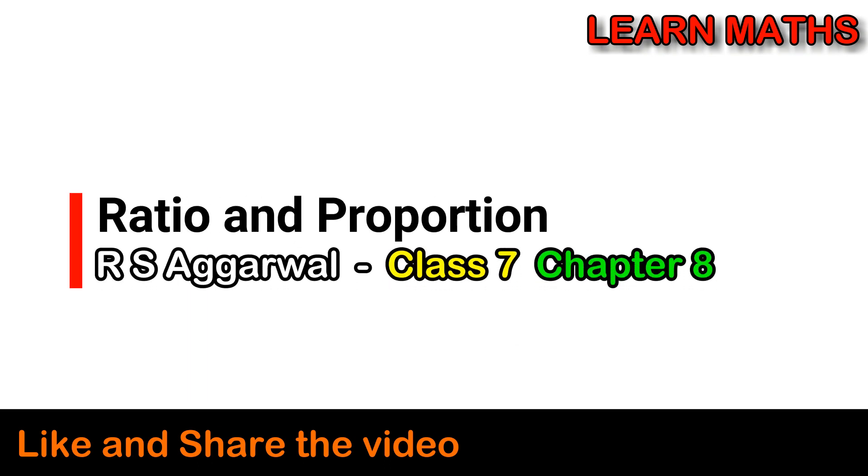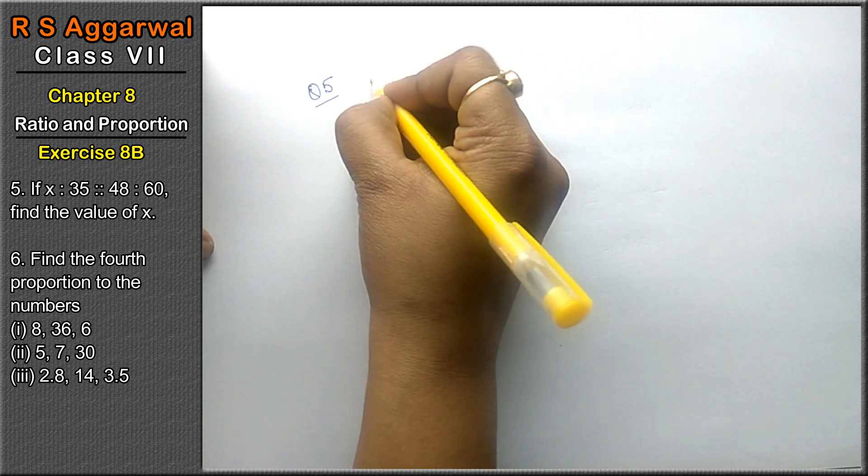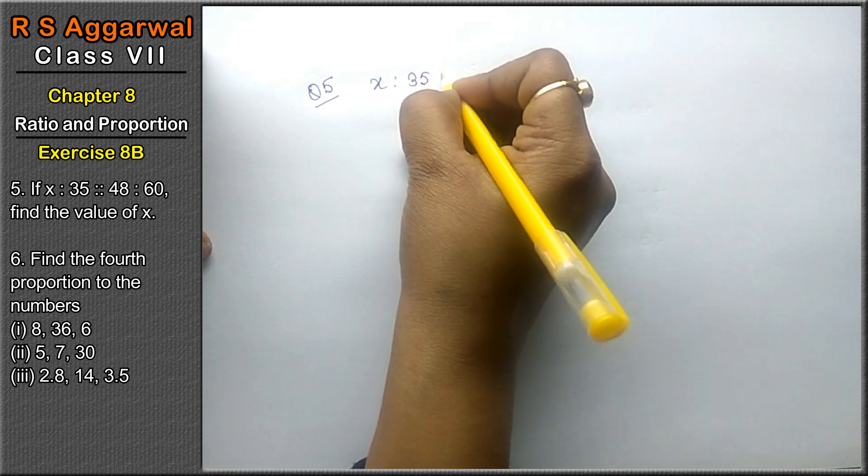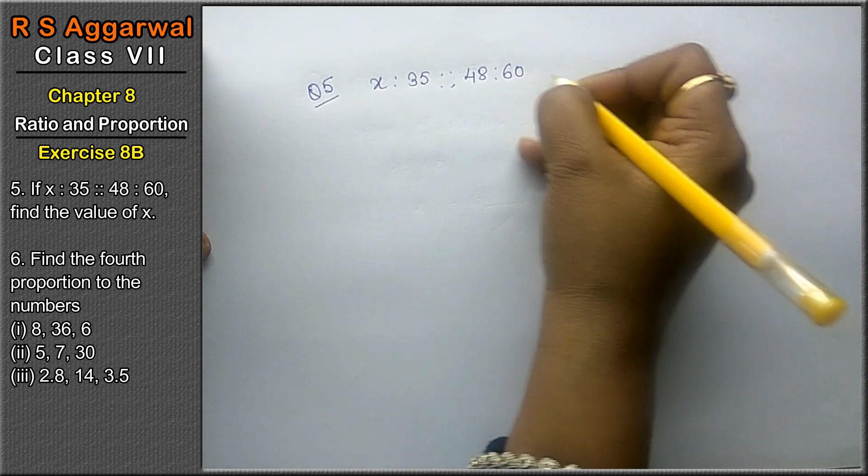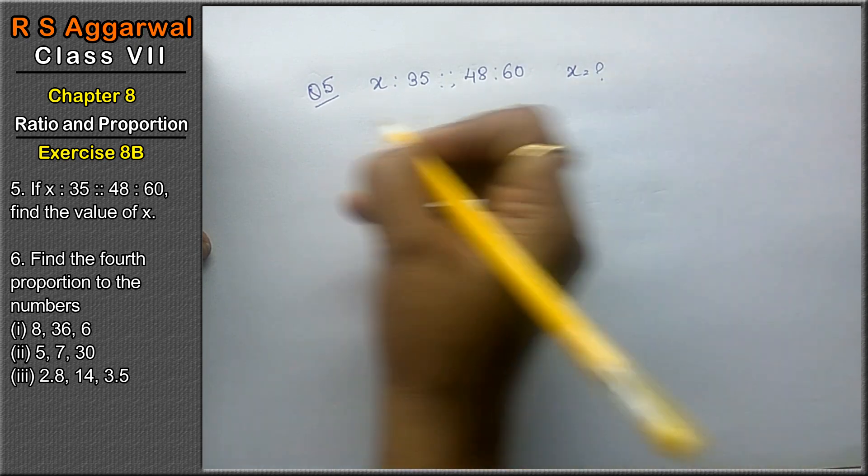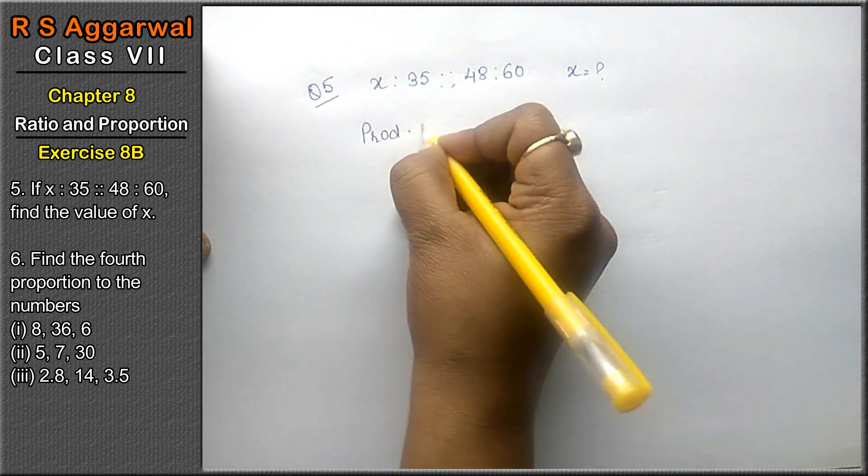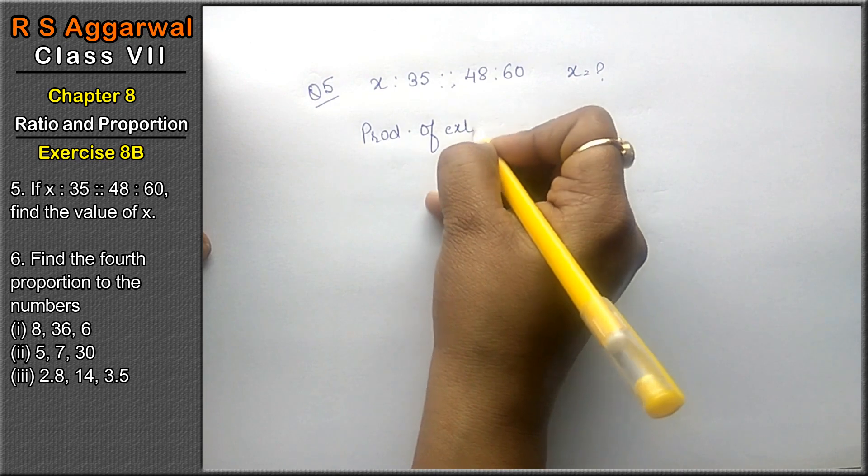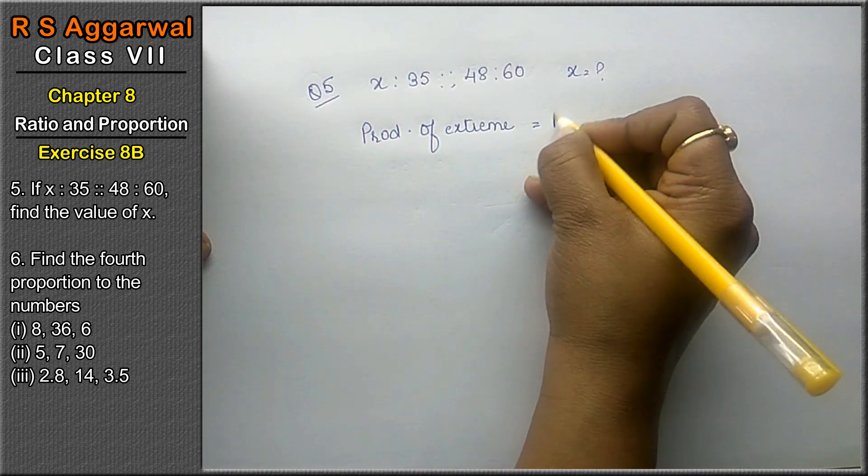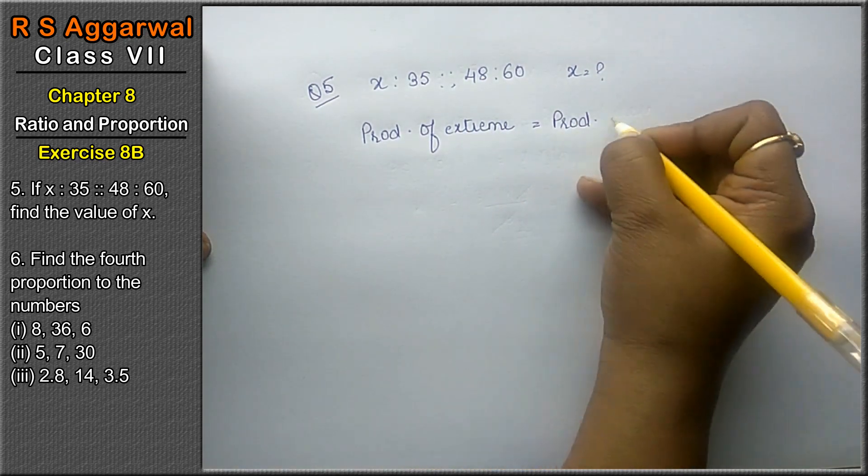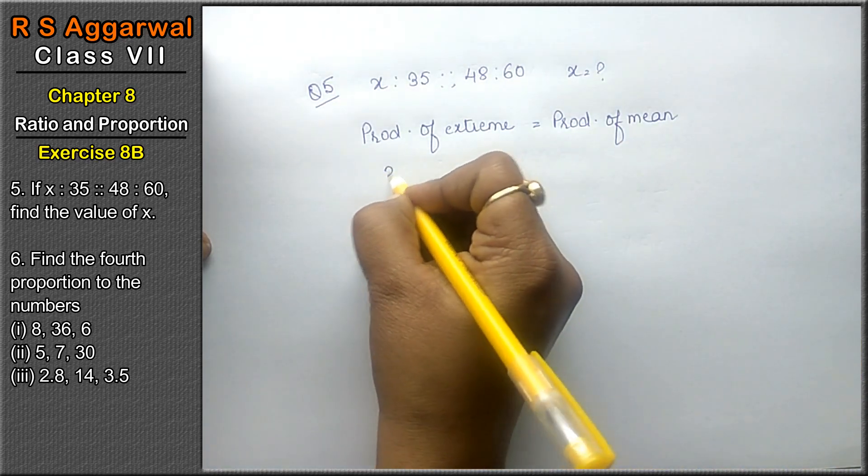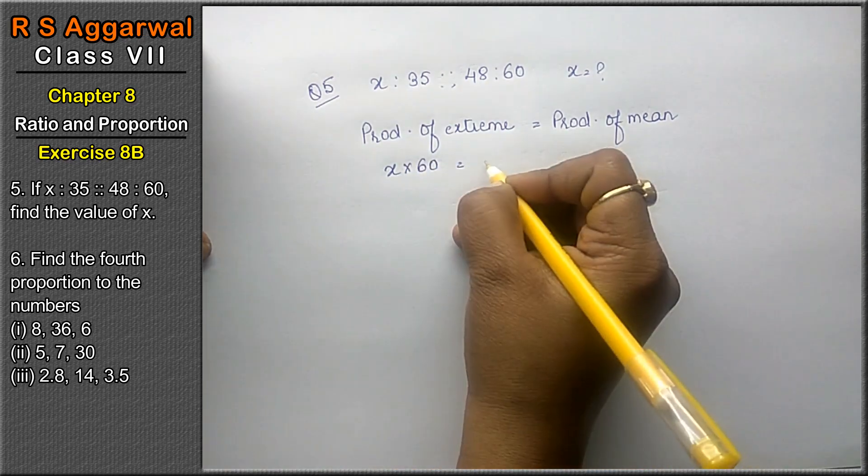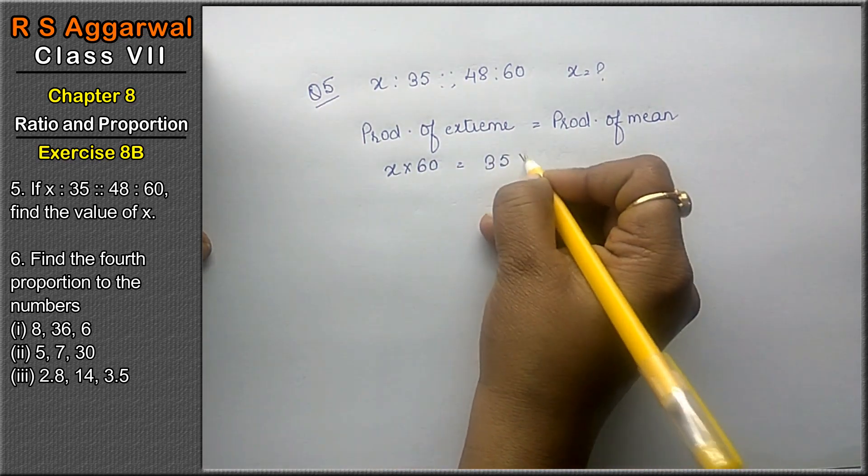Let's do question number 5 of exercise 8B, ratio and proportion. If x is to 35 is to 248 is to 60, then find the value of x. Now product of extreme equals to product of mean. Now product of extreme x into 60 is the product of extreme, and product of mean 35 into 48.